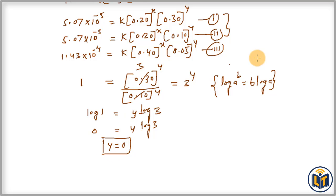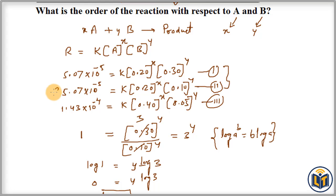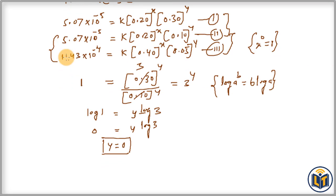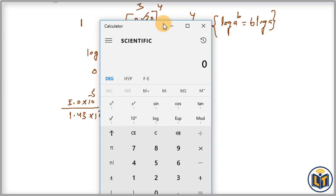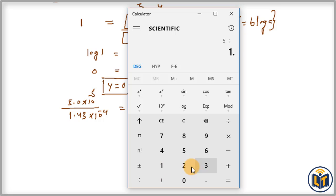Now we find X. Since Y = 0, any concentration raised to the power 0 equals 1, so the B term drops out. We divide the second equation by the third equation: (5.0 × 10⁻⁵) divided by (1.43 × 10⁻⁴) equals K·[0.20]^X divided by K·[0.40]^X, with the Y section becoming 1. K cancels out.